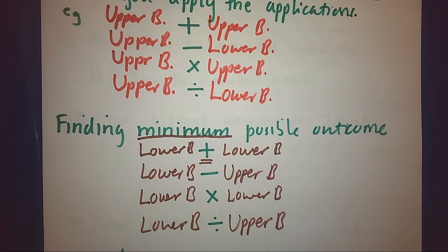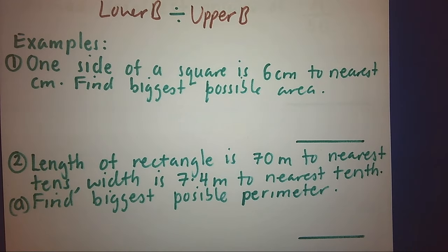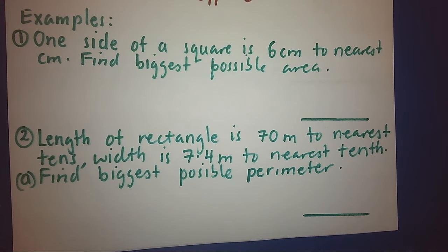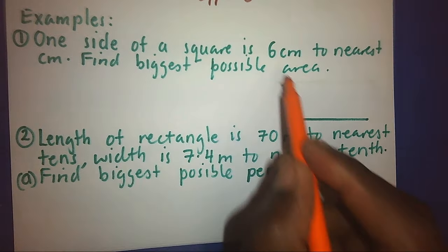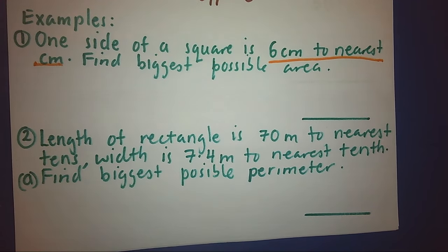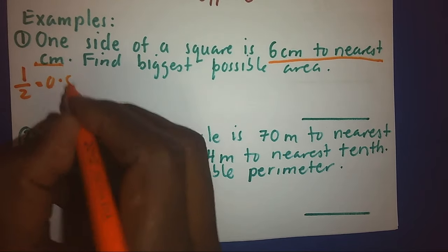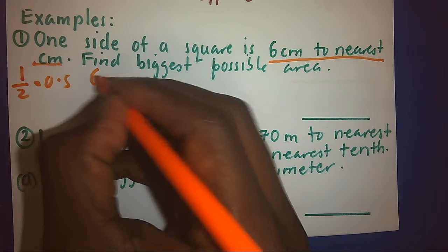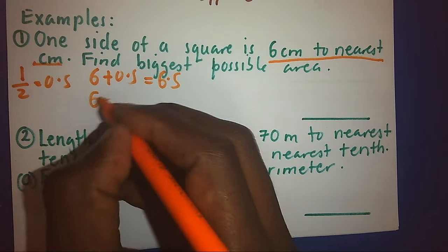Now let's look at a few examples to see how the application of bounds works. Example number one: one side of a square is 6 to the nearest centimeter. To the nearest centimeter means to the nearest ones, which means 1. So when I divide by 2, I get 0.5. Six plus 0.5 gives my upper bound, and 6 minus 0.5 gives my lower bound.